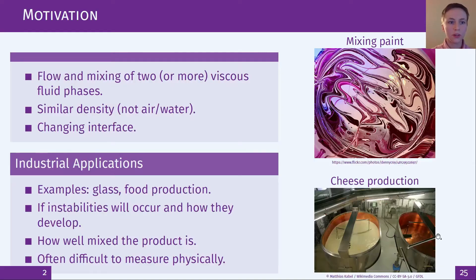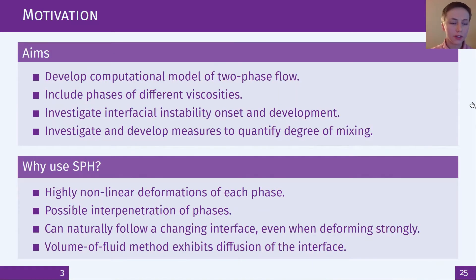Firstly the motivation. What is being modeled here is the flow and mixing of two viscous phases of similar density with a changing interface. These sorts of flows have many applications in industry such as the production of foods and glasses. It's important to know if the process goes unstable and how that instability develops as well as how well mixed the product is. These things can often be quite difficult or even dangerous to measure in practice. The aim then is to develop a computational model flow of phases with different viscosities to investigate the onset and development of instabilities at the phase interface and also to investigate the advantages of different mixing measures.